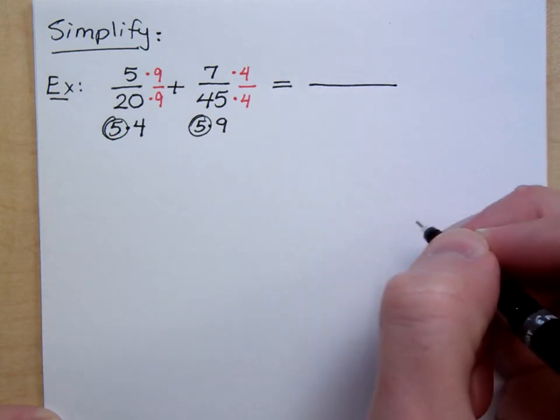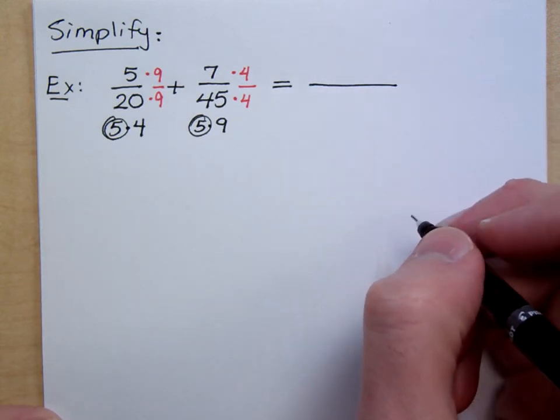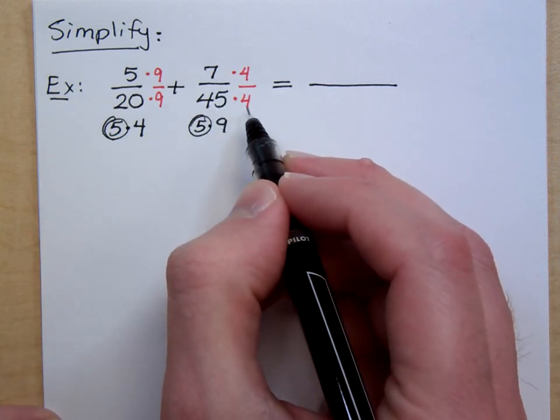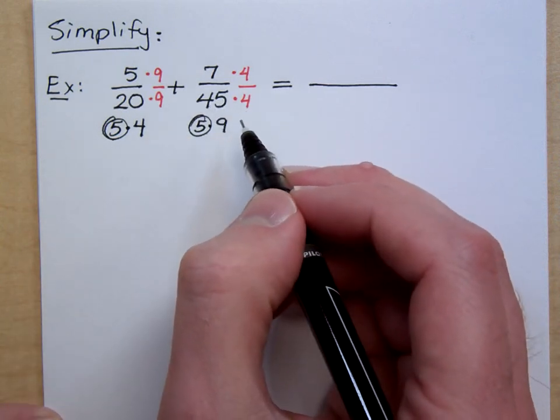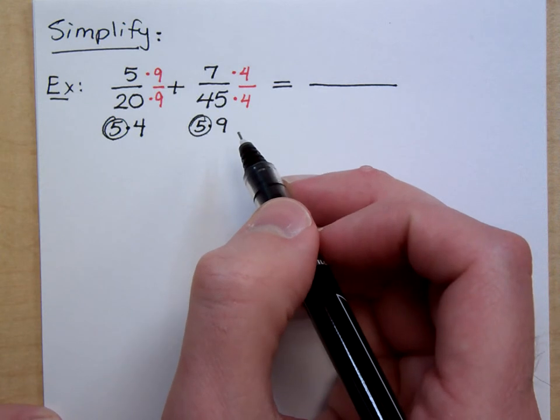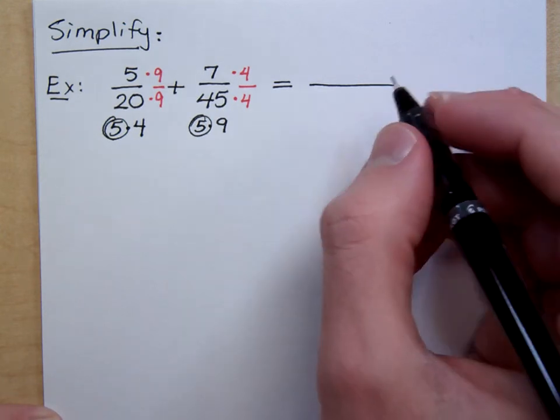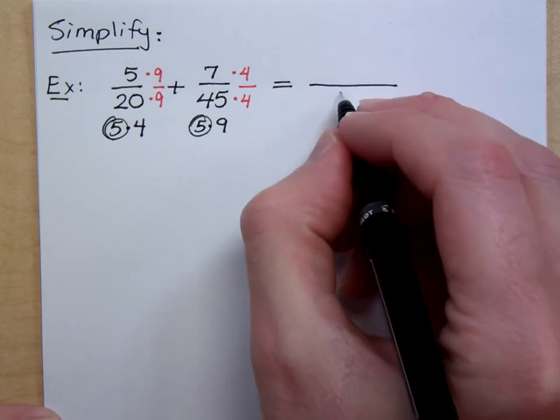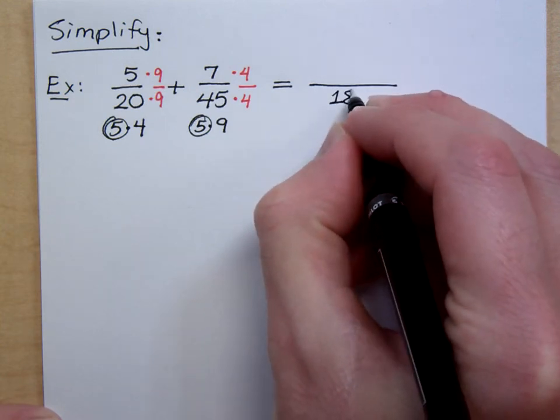So, what is my common denominator? And here's the thing. You can either do 20 times 9, or you can do 45 times 4. It doesn't matter which way you go here because you still get the same number. What is it? 180. I did 20 times 9. I thought that would be the easiest one to do.